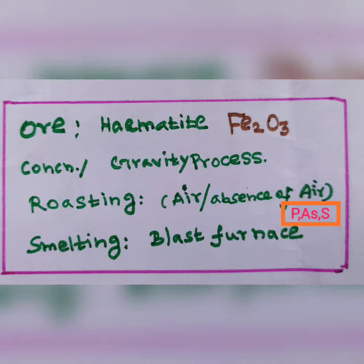Next, roasting. It is roasted with air and absence of air. During this process, phosphorus, arsenic, sulphur, they are removed as its oxide.